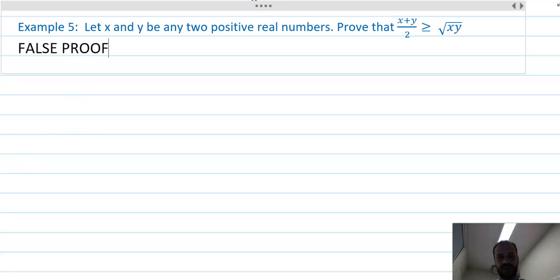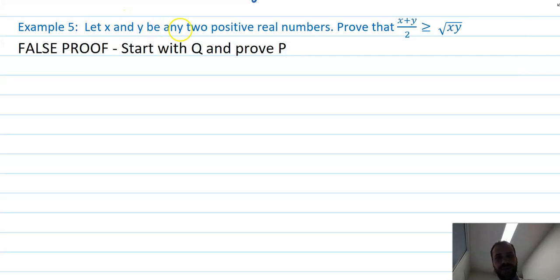So we're going to do something called a false proof. FALSE PROOF. I'm really writing that in capital letters. I want you to understand that what I'm about to do is a false proof. A false proof is very, very useful, but it's not an official proof until you make it an official proof. So let's do the false proof. What's a false proof? Start with Q and prove P. So we're saying, let x and y be any two positive real numbers. So that bit's P, and that implies Q or it's supposed to imply Q and this bit's Q. Okay. So in other words, what we're going to do, we're going to start from Q and we're going to prove P.